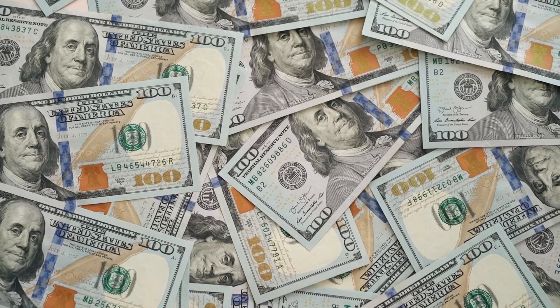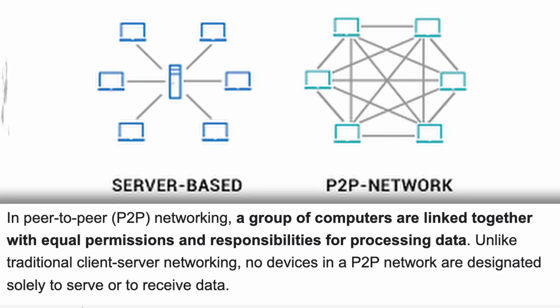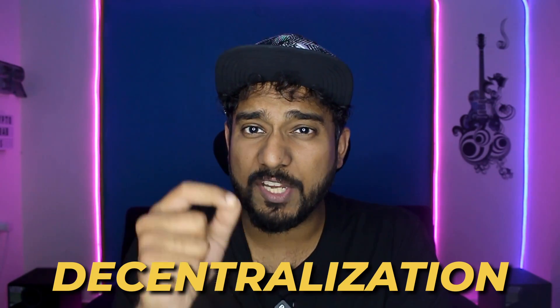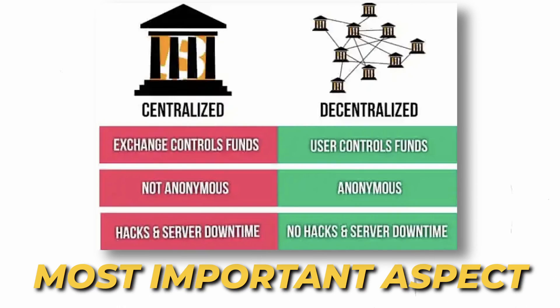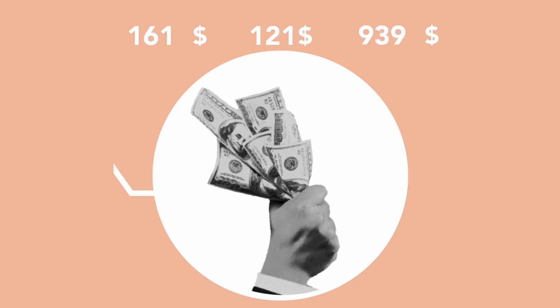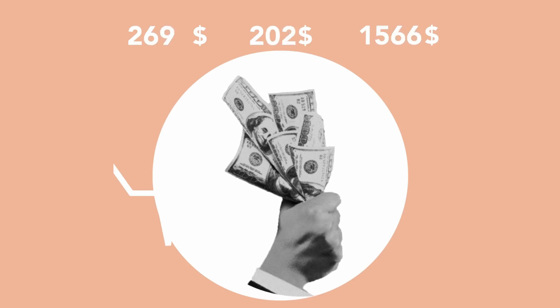Cryptos can function as a medium of exchange, a unit of account, and a store of value. Unlike fiat currency, most cryptos are decentralized and operate peer-to-peer without any intermediary. Decentralization is one of the most important aspects of cryptocurrency. Because cryptocurrencies are not issued by a central body, they cannot be controlled by one either, making them immune to government control, transactions, and interference. These currencies exist outside the reach of banks and central governments.